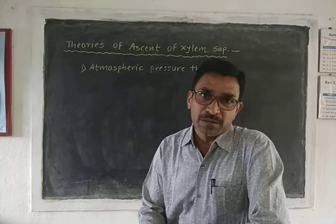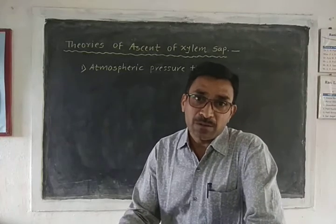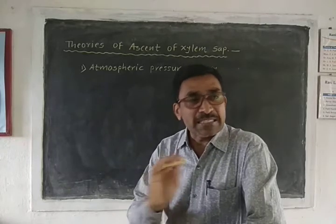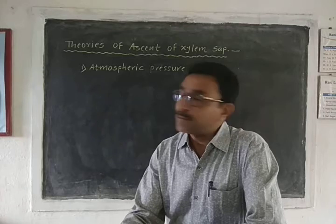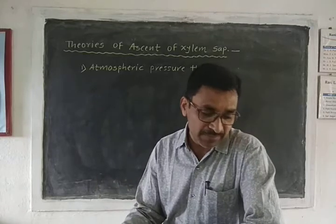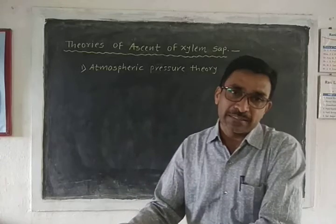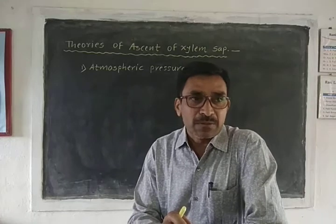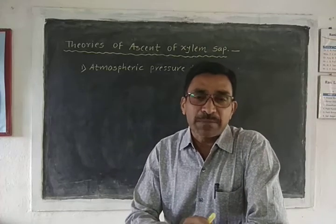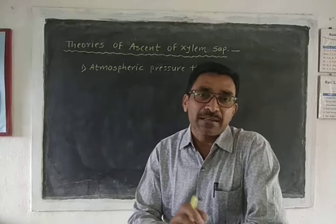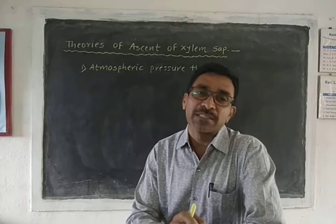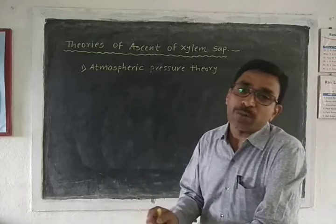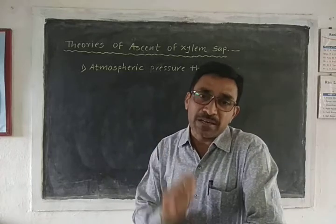Good morning friends. Today we are going to discuss the theories of ascent of xylem sap. There are six theories in our syllabus: the first is the atmospheric pressure theory, second is the capillary force theory, third is the imbibition theory, fourth is the root pressure theory, fifth is the pulsation theory, and the sixth is the water cohesion theory, also called Dixon and Jolly theory.